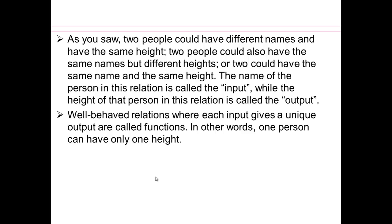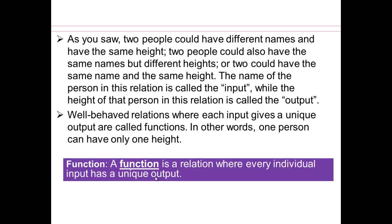So for example, remember how Sarah? There were two Sarahs in our classroom, same name, but with different heights. That would not be a function, because you have the same name giving you two different outputs. So a well-behaved relation where each input gives a unique output is called a function. So a function is a relation where every individual input has a unique output.